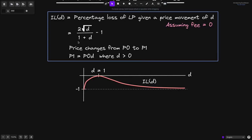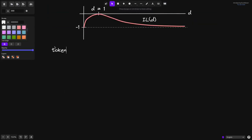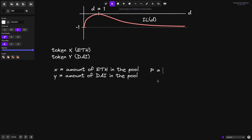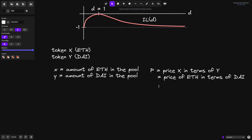For the rest of the video, I'll explain how to derive this equation. We'll say that we have two tokens: token X — for example, ETH — and token Y — for example, a stablecoin like DAI. Lowercase x is equal to the amount of ETH in the pool, and lowercase y is equal to the amount of DAI in the pool. Capital P is equal to the price of token X in terms of token Y — in our case, the price of ETH in terms of DAI — defined as the amount of DAI in the pool over the amount of ETH in the pool.